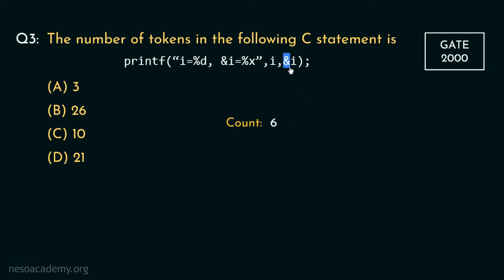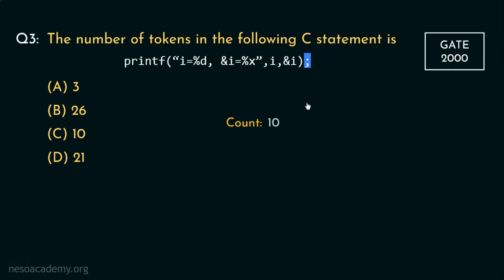The next token is the ampersand, which is a special character token, so our token count becomes 7. Next we again have the identifier token i, so count will now be 8. Thereafter, the right parenthesis — which signifies the end of the argument list of the printf function — is a punctuated token, so the token count becomes 9. Finally, the statement terminator, the semicolon, which is another punctuated token, increases the token count to 10.